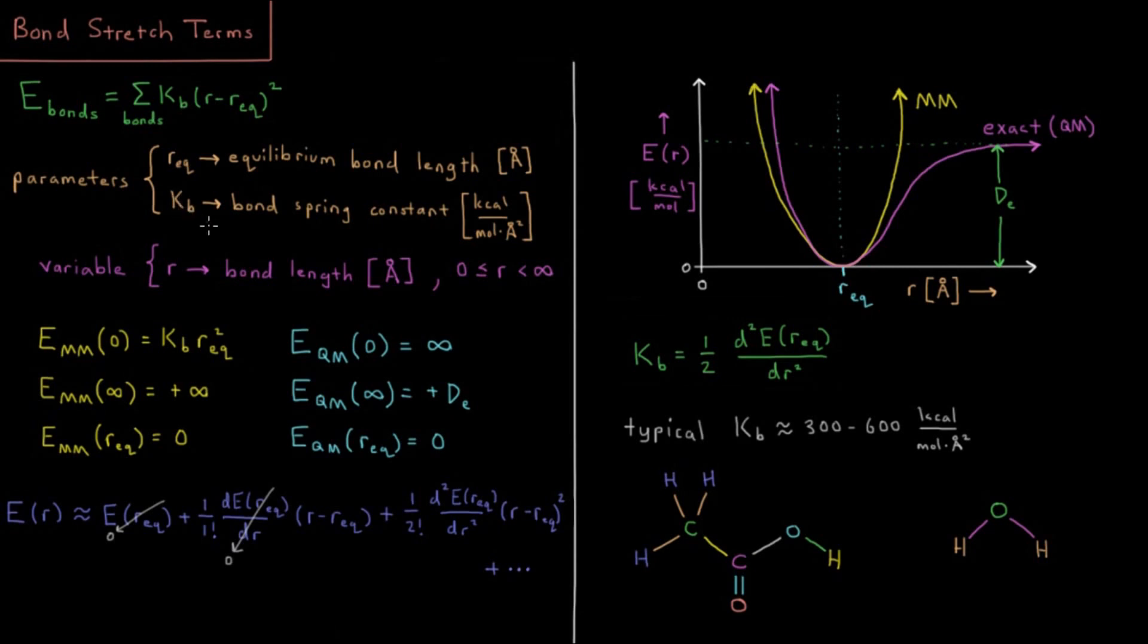I mentioned that we can get this spring constant if we desire from the second derivative at the bottom of the well here, if we want to do it that way. A typical value of this is typically going to be around 300 to 600 kilocalories per mole angstrom squared.